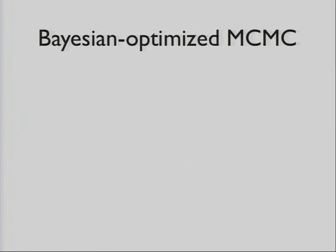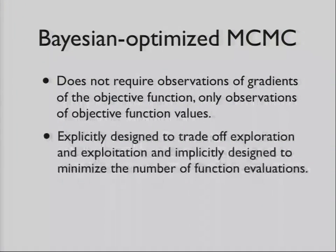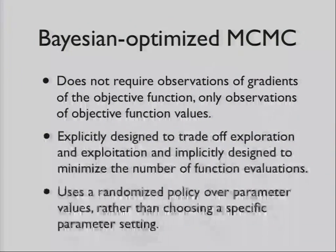That led to Bayesian Optimize MCMC. This basically uses Bayesian Optimization. You don't need observations to the gradient. You just need observations of the objective function value, and they can be noisy. The method itself is explicitly designed to trade off exploitation and exploration, so you can minimize the number of times you have to evaluate the function. What we do is we basically model that function, and then we construct a randomized policy over that, and use that randomized policy when we're sampling.